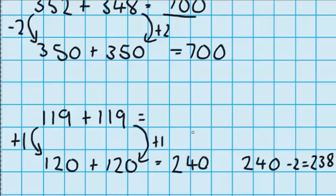equals 238. So the answer to 119 plus 119 is 238.